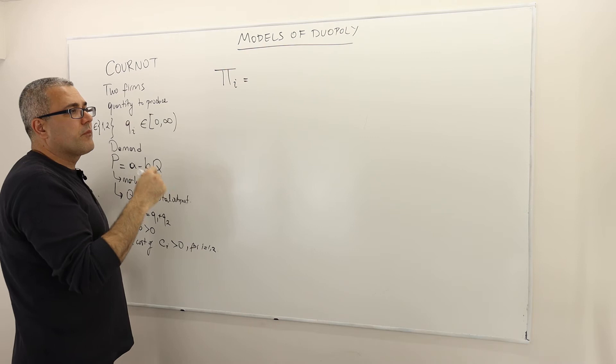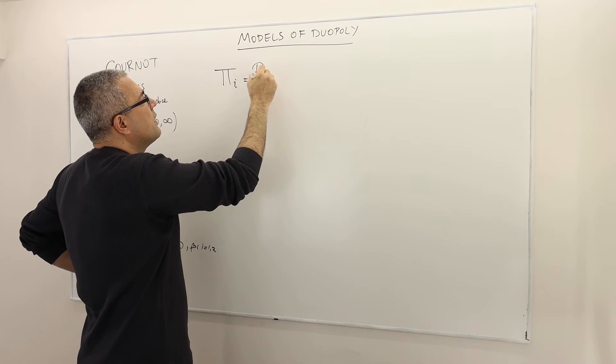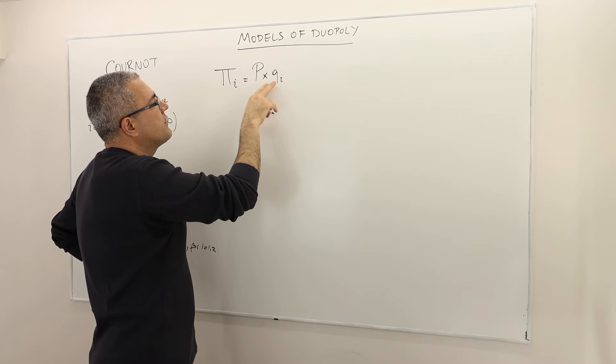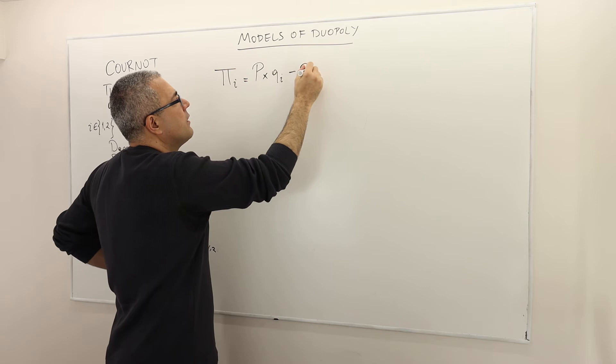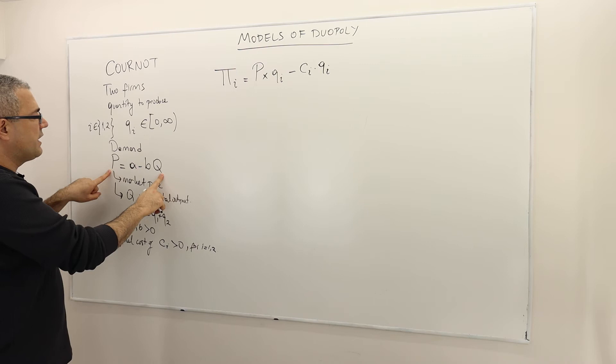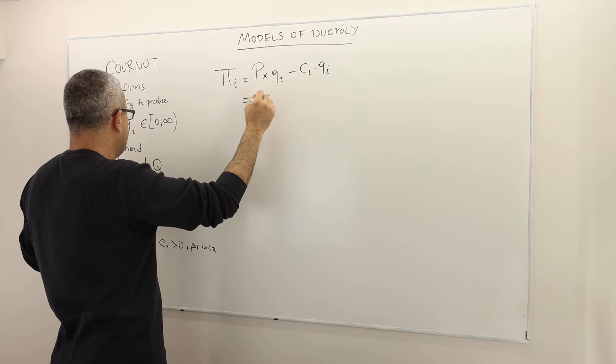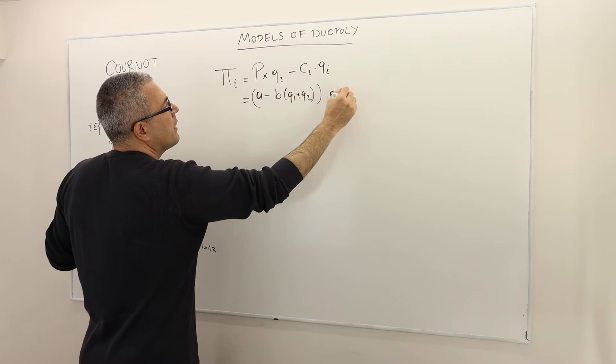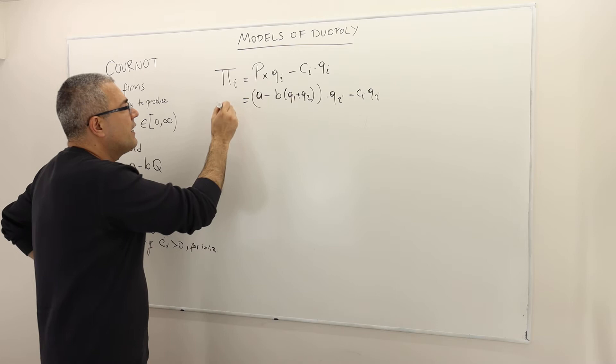The profit of firm i is equal to revenue minus cost. Revenue is price times quantity of firm i — as firm i, you do not care about the other firm's quantity. Cost is marginal cost times the quantity you produce. The price is given by the inverse demand function, so it's A minus B times (Q1 plus Q2). This gives the profit function of firm i.